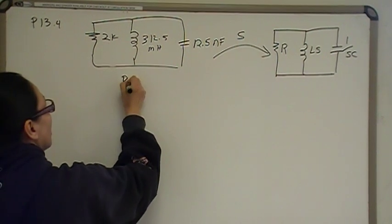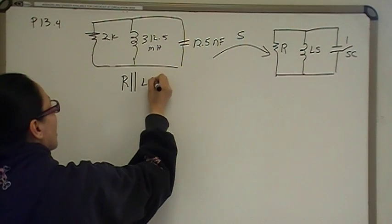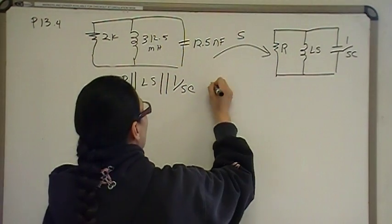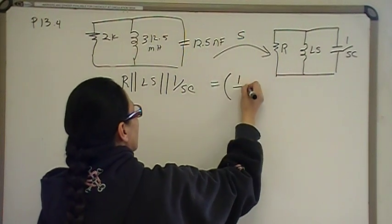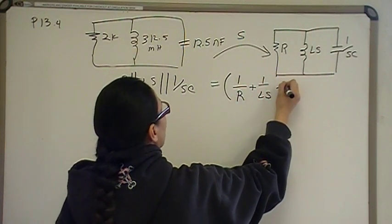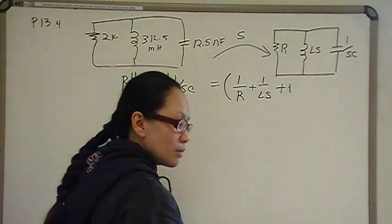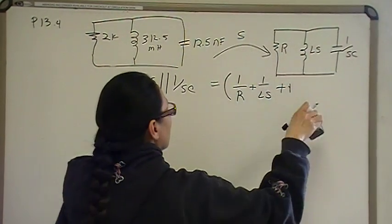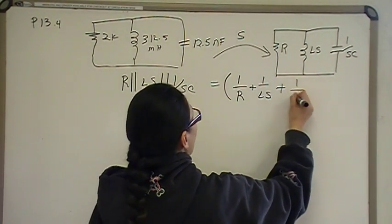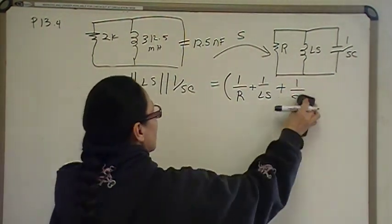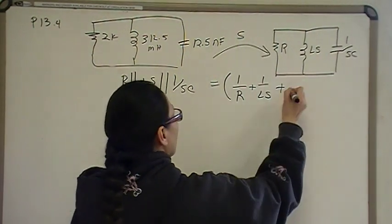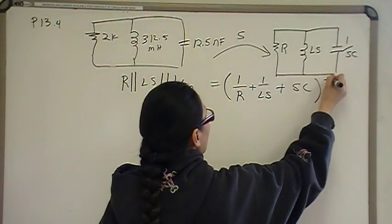So, R in parallel with LS, in parallel with 1 over SC, is the same as it was in the time domain, it's going to be 1 over R plus 1 over LS, plus 1 over SC. SC inverse of itself is just going to be the reciprocal. So, it's just going to be SC, and then the inverse of that.